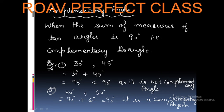So again I repeat, what do you mean by complementary angles? When we add two angles and we get 90 degrees, that means it is a complementary angle. Thank you.